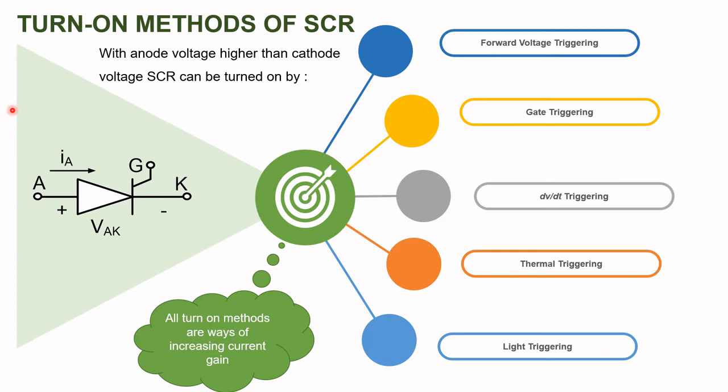In our last video, we saw the turn-on techniques of SCR: forward voltage triggering, gate triggering, dv/dt triggering, thermal triggering, and light triggering. In this video, we are going to prove that all these methods are ways of increasing the current gain alpha, relating each turn-on technique to the two transistor analogy.